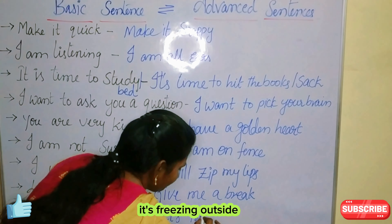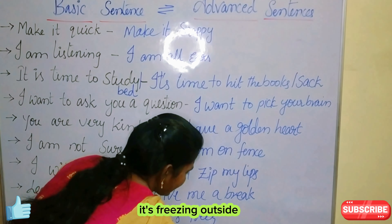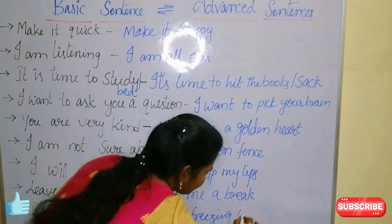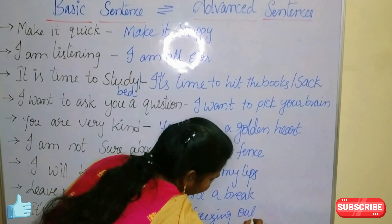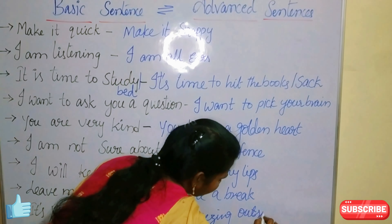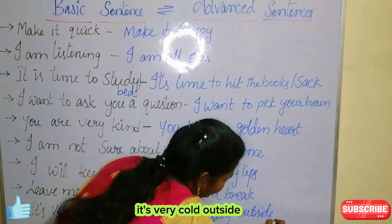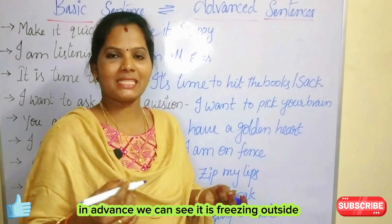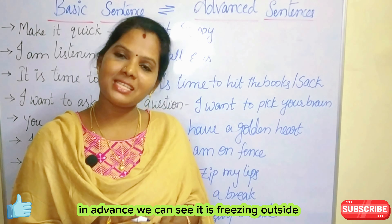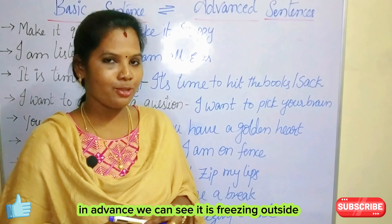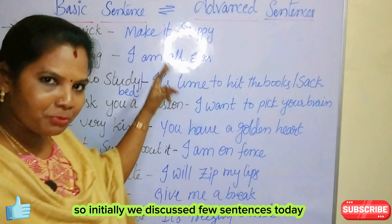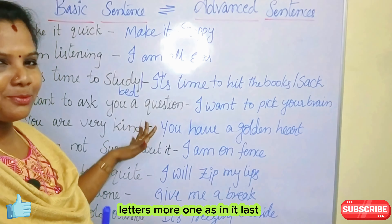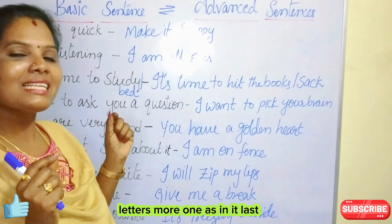Next one: 'It is very cold outside.' The advanced version is 'It is freezing outside.' It is very cold outside — in the advanced way we say it is freezing outside.